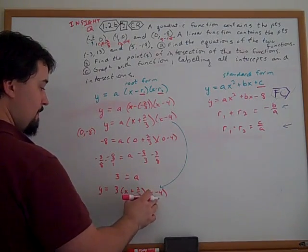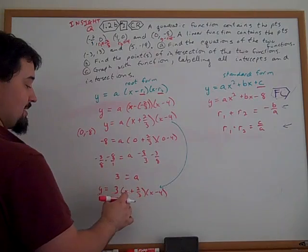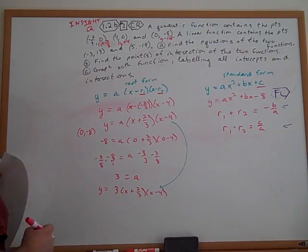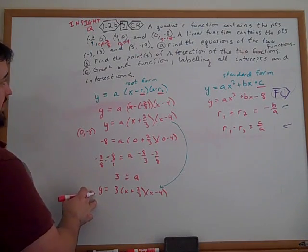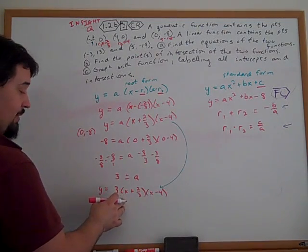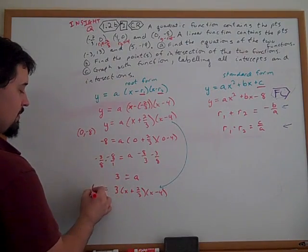Most of the time, we would want to multiply it out into standard form. Let's just say that we leave this right now for part A. What we'll see with part B is when we're trying to find the points of intersection, we're going to need to convert this form anyways. So we'll go ahead and say this is done for part A.